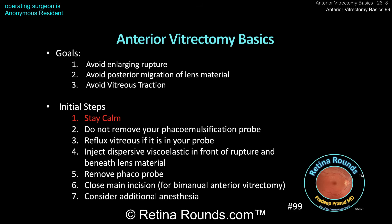Let's pause and talk about what you do at this moment. You've got a posterior capsular violation. The anterior hyaloid face may be intact and vitreous may not be coming forward. You want to avoid enlarging that rupture, which may create a higher likelihood for nuclear or cortical fragments to migrate into the posterior segment. And if vitreous is coming forward, you want to avoid vitreous traction. The first and most important advice: try to stay calm. This is not something you expected, but you have to stay calm so everyone in the room stays calm, and you can make better decisions if you take a breath and try to salvage the situation.